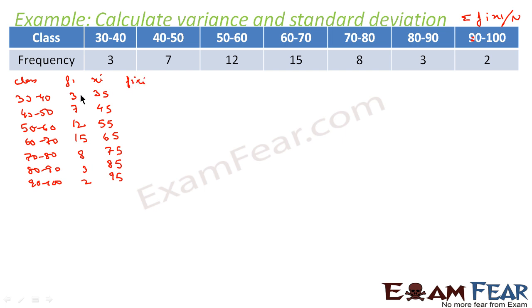Now we multiply fi times xi. 3 into 35 is 105. 7 into 45 is 315. 12 into 55 is 660. 15 into 65 is 975. 8 into 75 is 600. 3 into 85 is 255. 2 into 95 is 190.